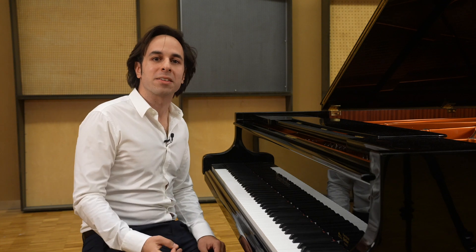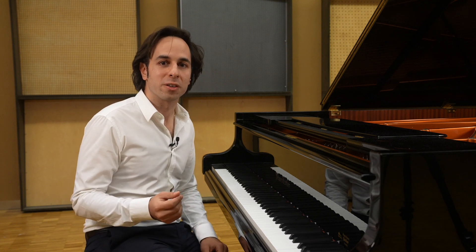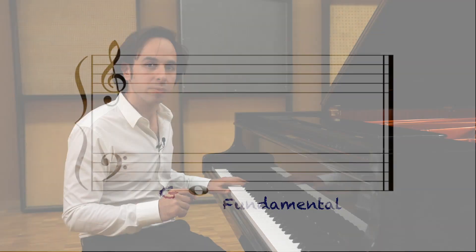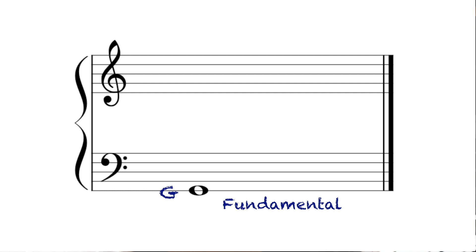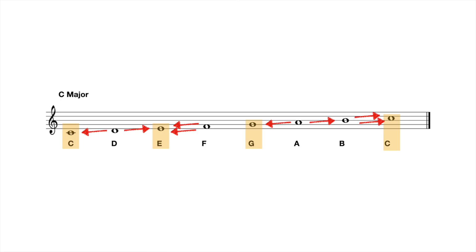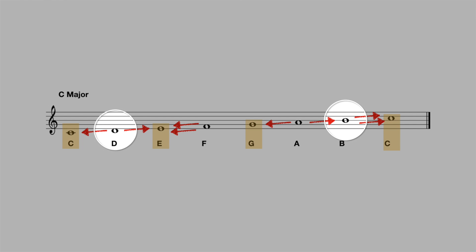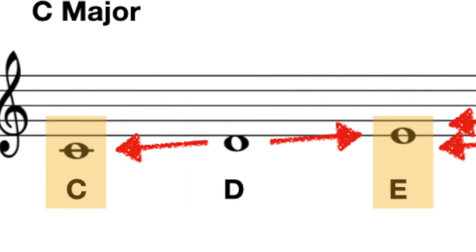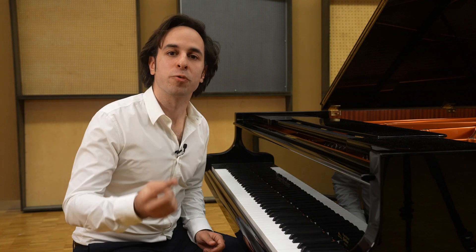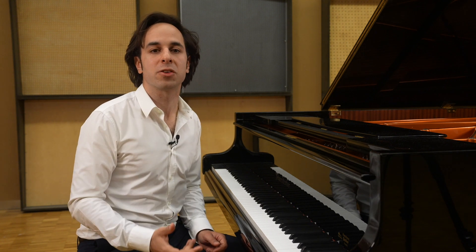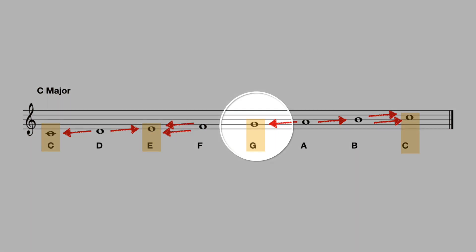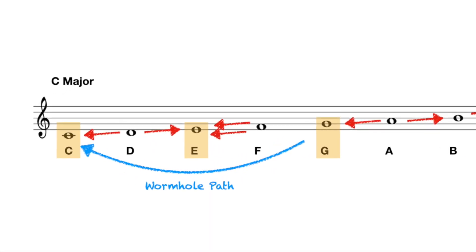Why does the fifth tone, the dominant, have any drive towards the tonic at all? A possible explanation is that when we play the note G, we also hear its most prominent overtones — the partials D and B. In the context of C major, both D and B are active in the directions of the tonic C: B is the leading tone and D the descending leading tone. So the note G contains within itself two prominent partials which act as leading tones to C. There is something within the nature of G which points to C, and this might be what generates this hidden wormhole.